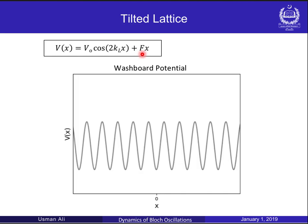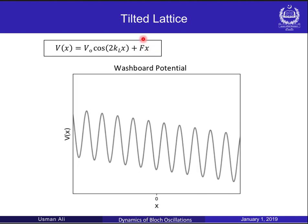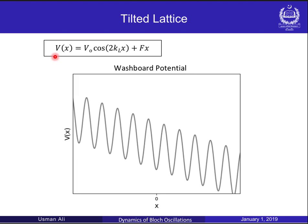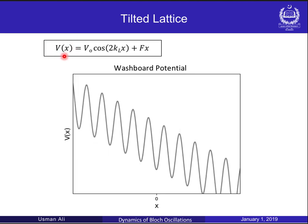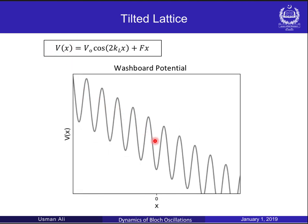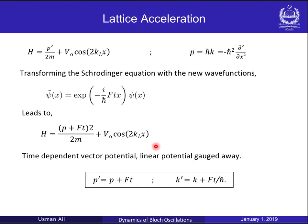Let's add an external force, which we choose to be constant. To see the effects induced by this external forcing, we transform the Schrödinger equation with a new wave function. This leads to an effective time-dependent vector potential where the linear potential is effectively gauged away.